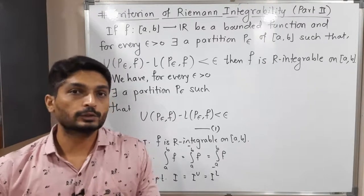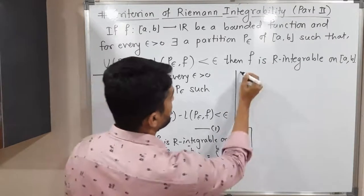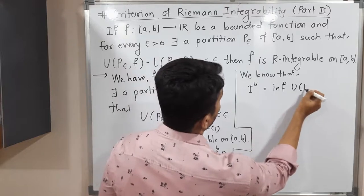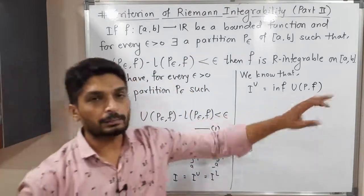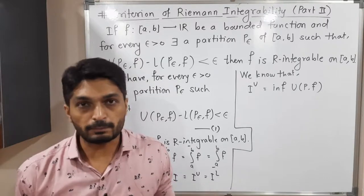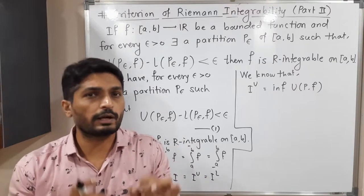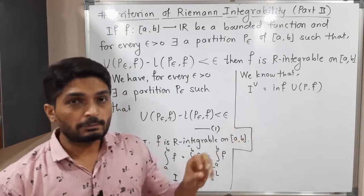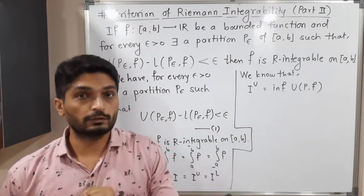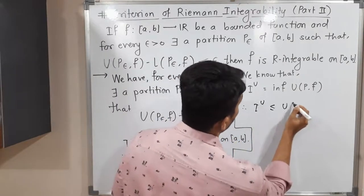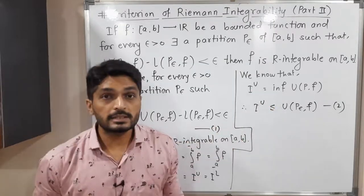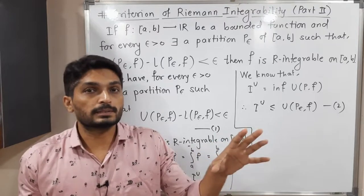I will start with the definition of the upper integral. The upper integral is the infimum of U(P, F) over all partitions P of [A, B]. For different partitions, we have different upper sums, and the smallest value among all upper sums is the upper integral. That means if you take any arbitrary upper sum, the upper integral will be less than or equal to it. Therefore, I_U is less than or equal to U(P-epsilon, F). I will call this inequality 2.